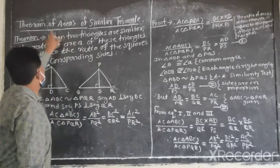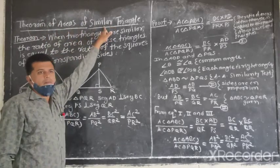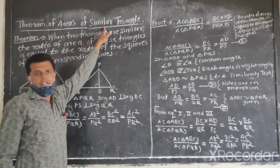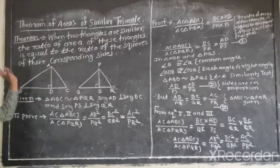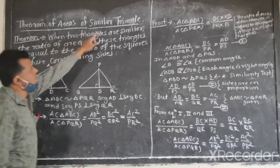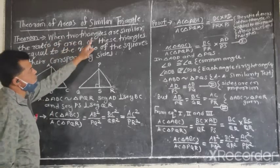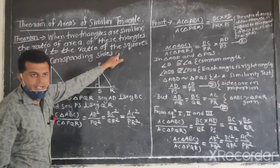We have to study the theorem of area of similar triangle. And the area of two triangles is similar, when two triangles are similar. The ratio of the area of these triangles is equal to the ratio of the square of the corresponding side.